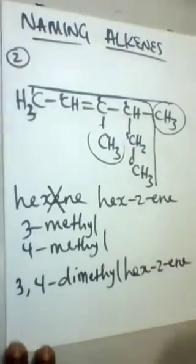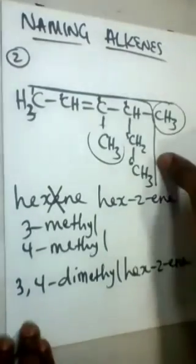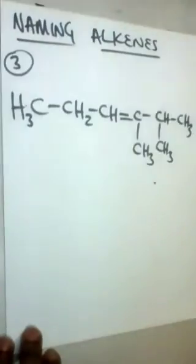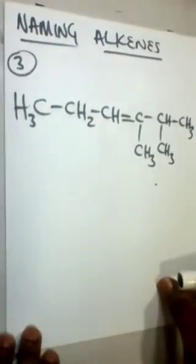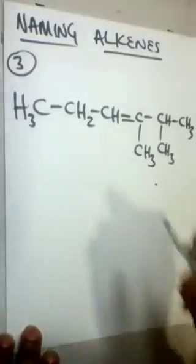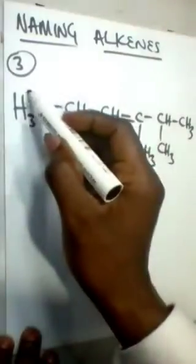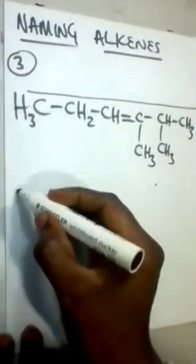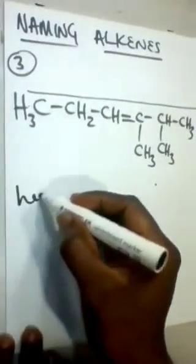Here's another simple example — number three. Identify the longest chain. Draw a straight line across that includes the longest chain, and this gives us six carbon atoms. So that's hexene.